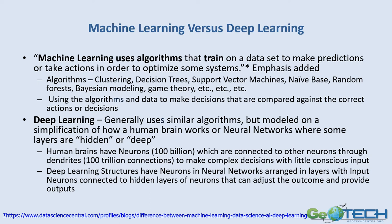Deep learning generally uses similar algorithms, but it's modeled more on a simplification of how the human brain works. You often hear the term neural networks, where some layers within the network are hidden or deep. The human brain has a hundred billion neurons, all interconnected through dendrites, with over a hundred million connections, allowing decisions with little conscious input. Deep learning structures have neurons and neural networks arranged in layers, with inputs connected to hidden layers that adjust the outcome and provide outputs.